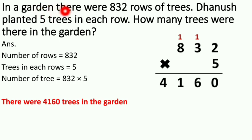In a garden there were 832 rows of trees. Danush planted 5 trees in each row. How many trees were there in the garden? Number of rows is 832. Danush planted 5 trees in each row, so trees in each row is 5. How many trees were there in the garden?